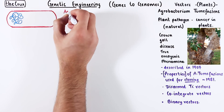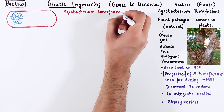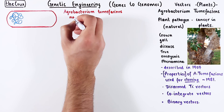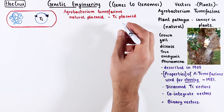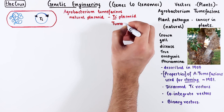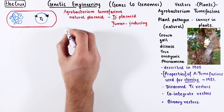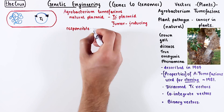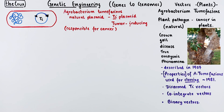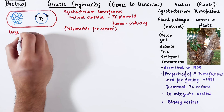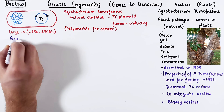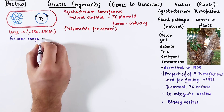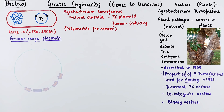The pathogen Agrobacterium tumefaciens contains a natural plasmid called Ti plasmid. This stands for tumor-inducing plasmid. This plasmid is responsible for causing the cancer in plants. Depending on the pathogen strain, the plasmid can range from 150 to 250 kb in size. The large size means that it is a broad-range plasmid.